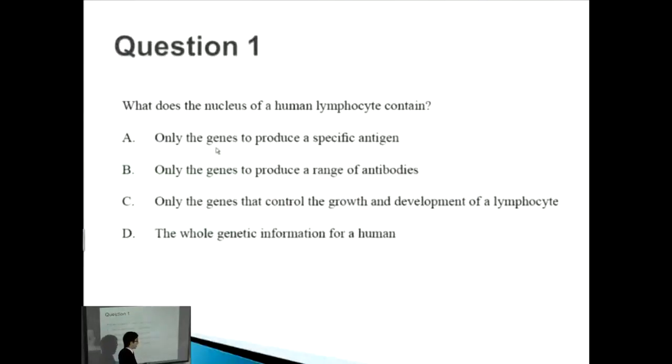The library has a complete collection of books, but only some of those books are available to be borrowed. The nucleus of a human lymphocyte contains all the information that's necessary, not just genes for a specific antigen or antibodies or growth and development. The answer is D, the whole genetic information for a human. You can actually clone a human from a human lymphocyte cell as well as a human hair cell or any other kind of cell, as long as it has the complete genetic information.